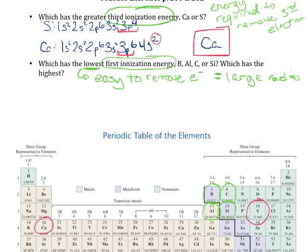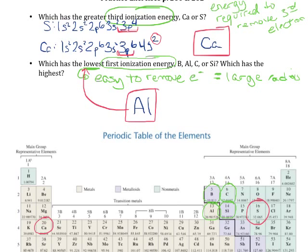Of those four, the one with the largest radius has to be either aluminum or silicon, because we know that radius increases as we go down the period. Boron and carbon are going to have relatively small radii. The general trend for atomic radius is that it gets smaller moving to the right, which tells us that aluminum is going to have the largest atomic radius — so aluminum is going to have the lowest first ionization energy.